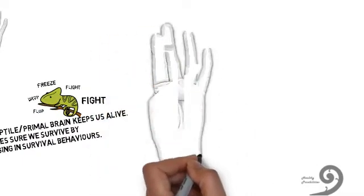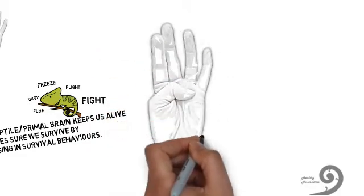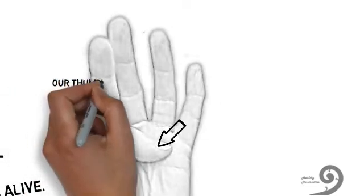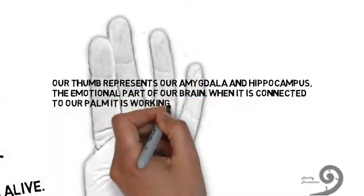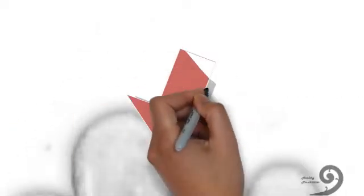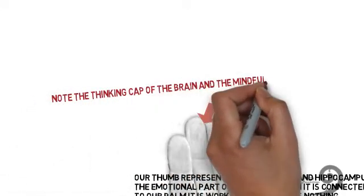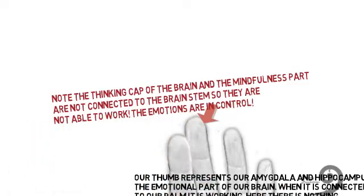When your hand is in this position with your thumb touching the palm, the thumb is connected to your brain stem. Our thumb here is representing our amygdala and hippocampus, the emotional parts of our brain. It's working and in control. The thinking cap of the brain and the mindfulness part are not connected to the brain stem, so they're not able to work. The emotions are in control.